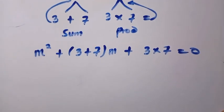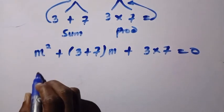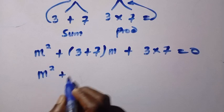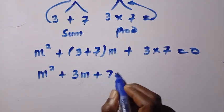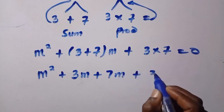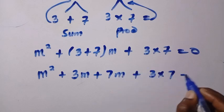Having gotten this, we are going to group this as m squared plus 3 times m, that is 3m, plus 7 times m, we have it as 7m, plus also this is 3 multiplied by 7, equals 0.